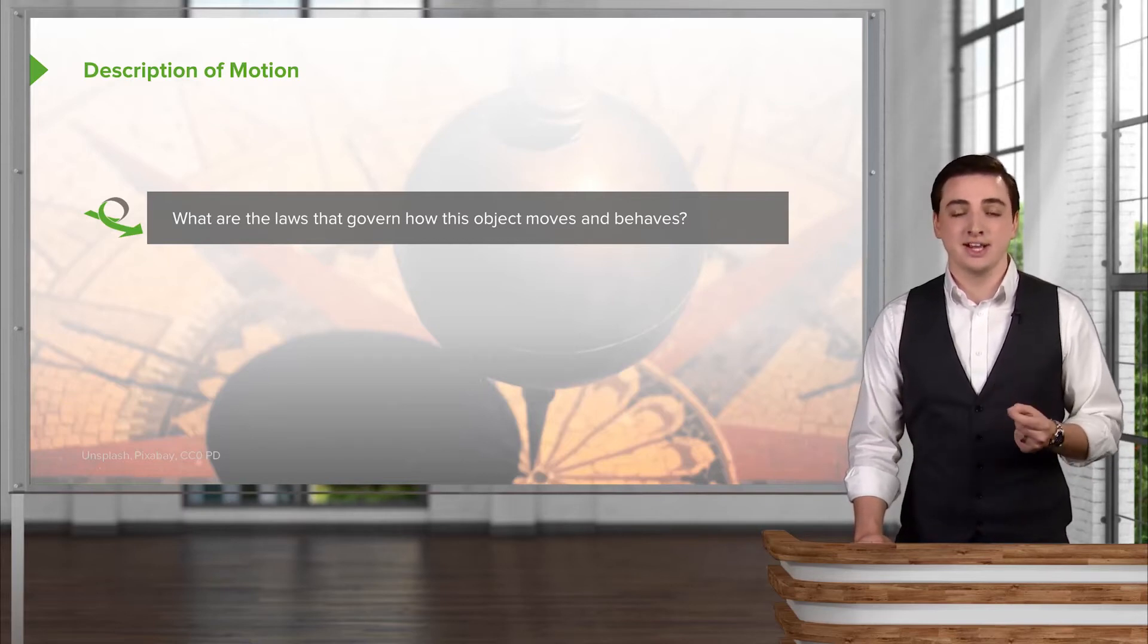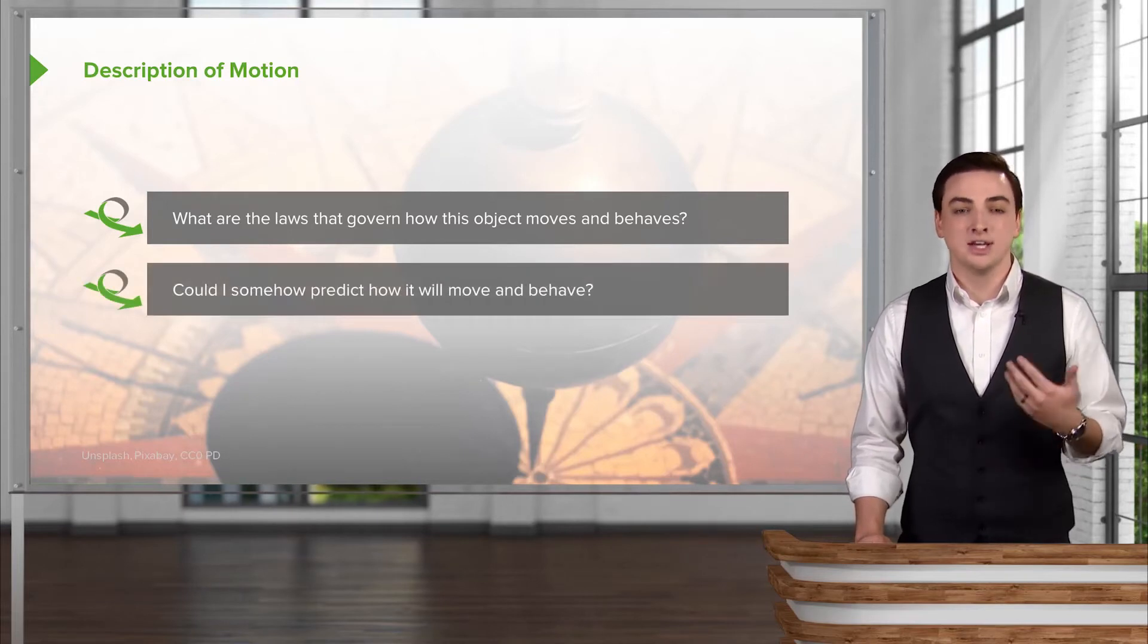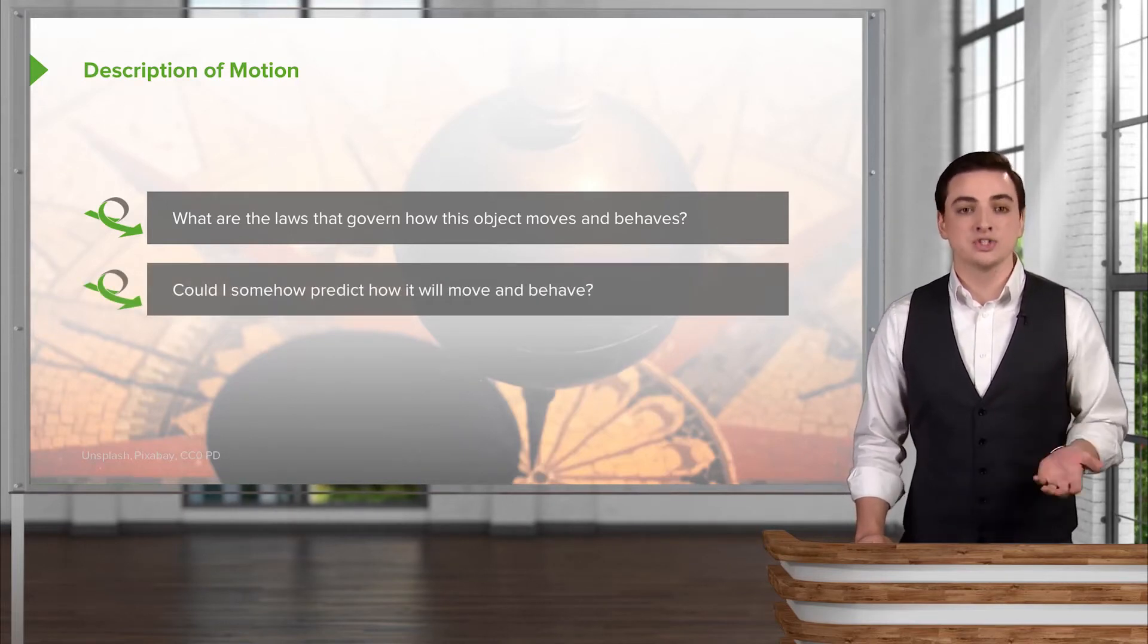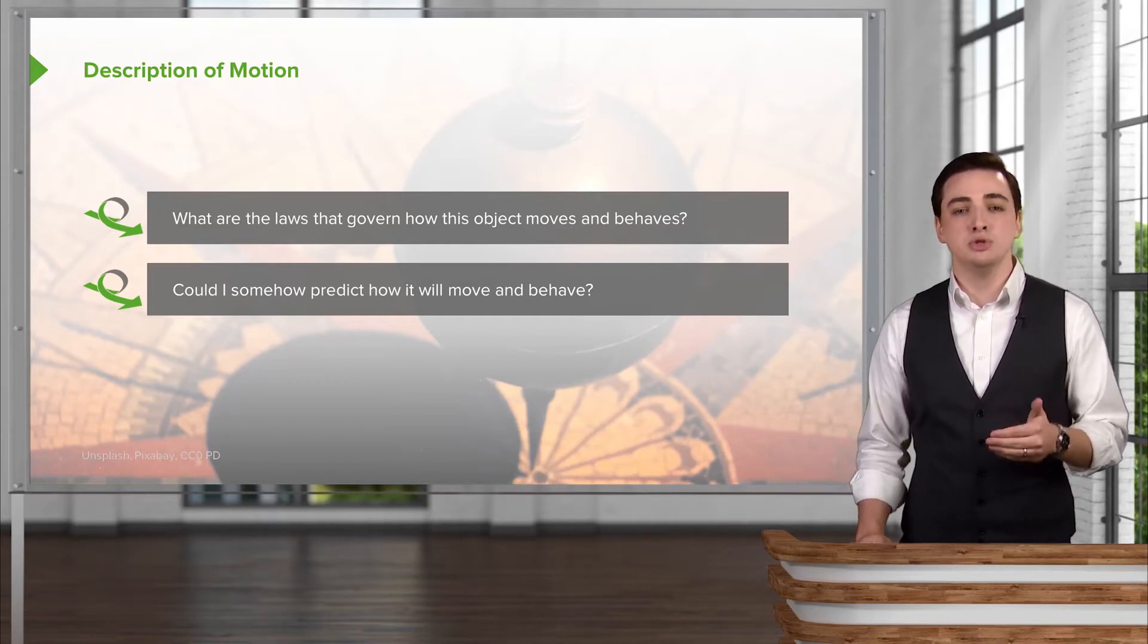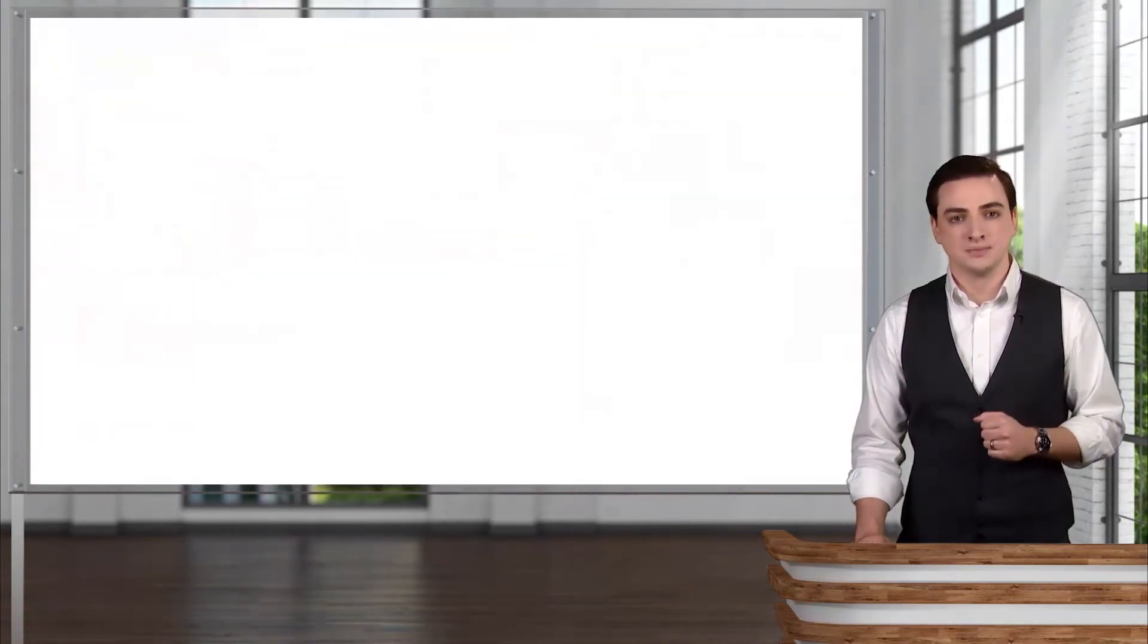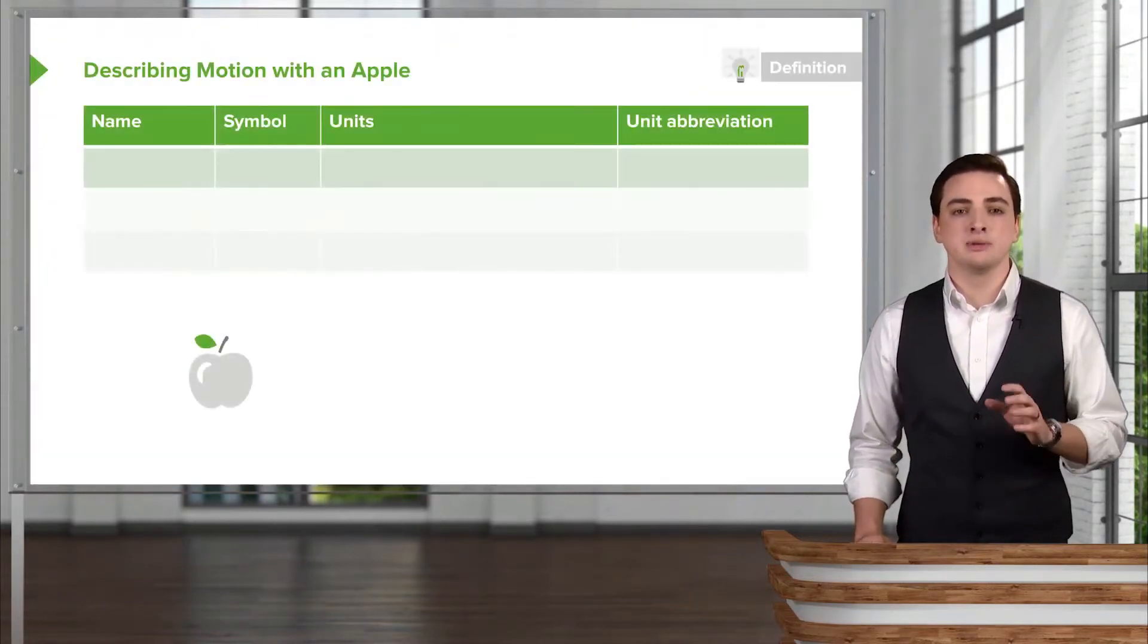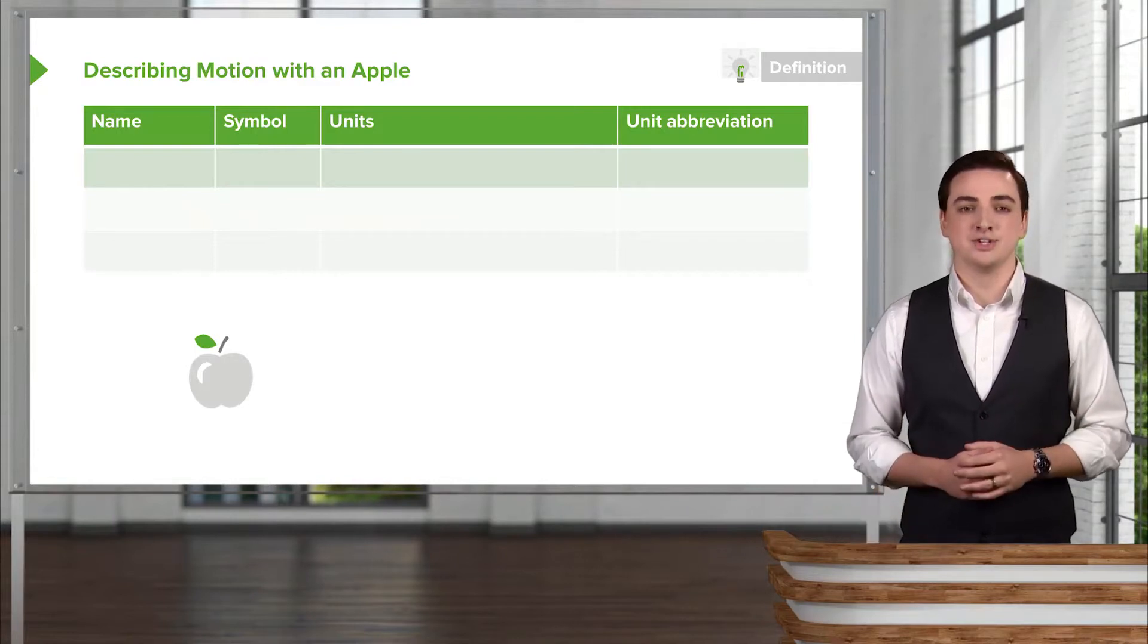But secondly, and very key and crucial to physics and the idea of developing physics, is using the ideas of what I just saw happen and measuring what I just saw happen. Could I somehow predict how it will move and behave in the future if I know what happened right now? Using these two questions we can really motivate a few things we can measure about a simple object like the apple I just showed you.